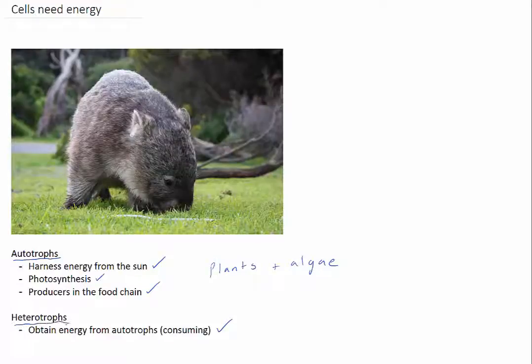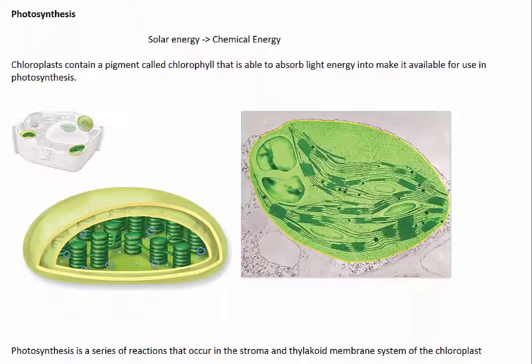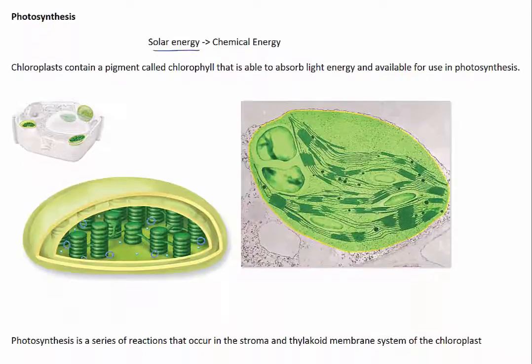Autotrophic organisms contain cells that can use energy from the sun. Individual cells of heterotrophic organisms require energy from other matter. In either case, if cells are supplied with enough energy, the whole organism can function efficiently. Most life depends on the energy from our sun. Autotrophic organisms convert solar energy from the sun into chemical energy through a process called photosynthesis.